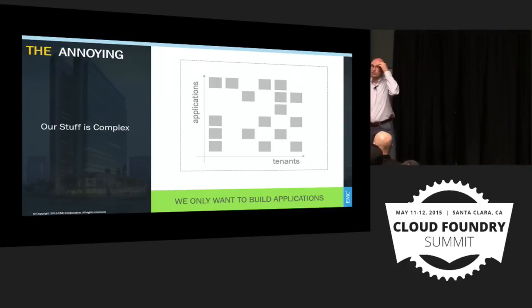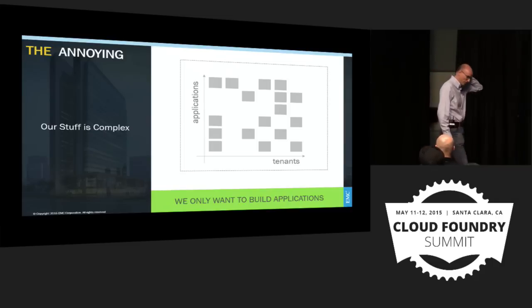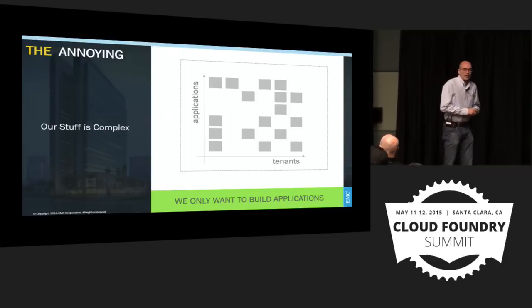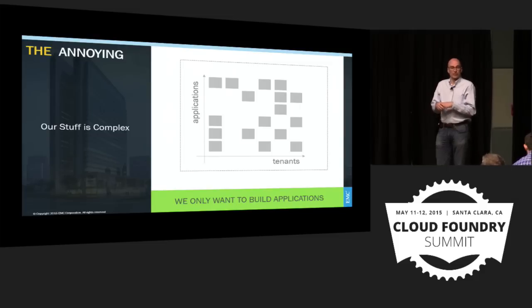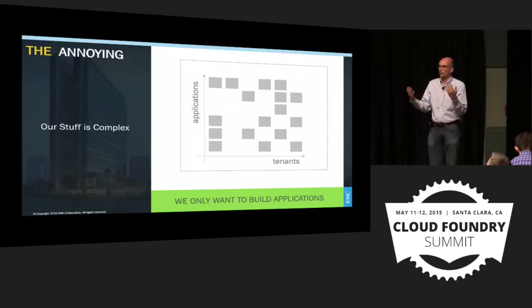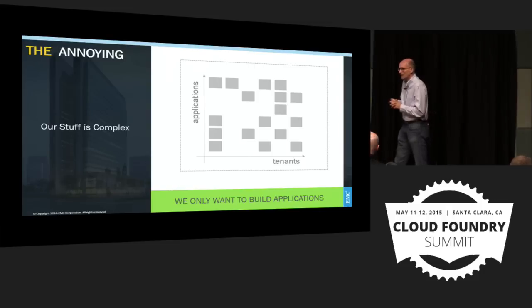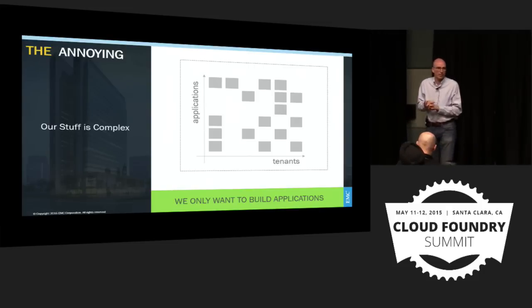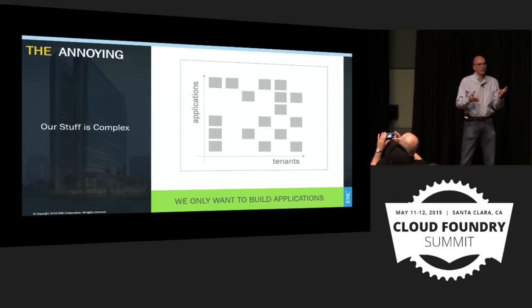Several years ago we started to build a new content platform. The Enterprise Content Division is primarily focused on content management applications — rich content apps, process-centric apps, and apps on the intersection between content and process. It's a pretty sizable division: around $700 million in revenue and two and a half thousand people.